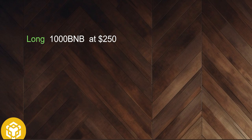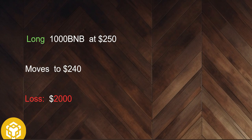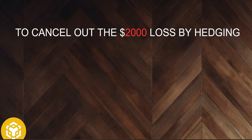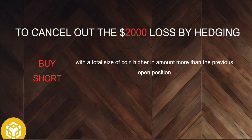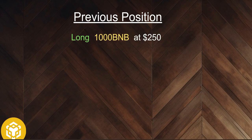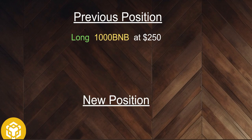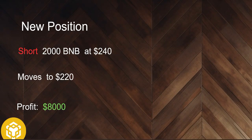Let me give you a real-life example of how to use hedge mode. Let's say we longed 1,000 BNB at $250 and the price moved to $240 — this is incurring a total loss of $2,000. For us to cancel out this $2,000 loss by hedging, we need to buy a short trade with a total size of coin higher in amount — more than the previous open position. For example, the previous long position had a total of 1,000 BNB at $250. The new position should have at least twice the size — we need to open a short of 2,000 BNB at the $240 price or the current market price.